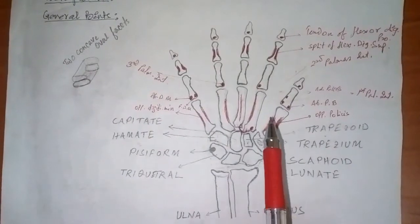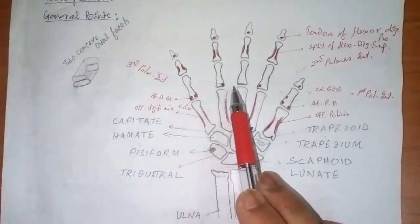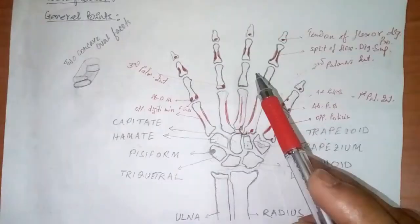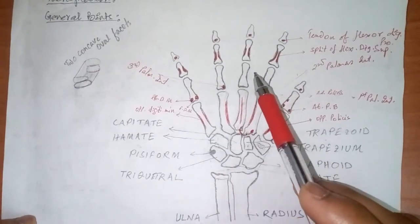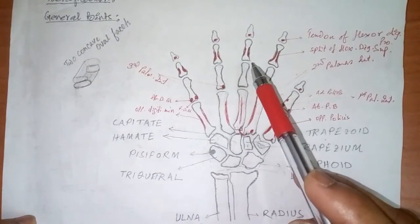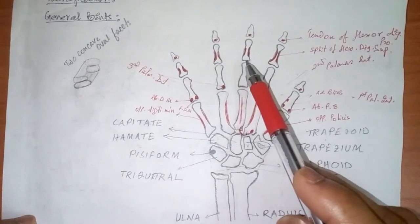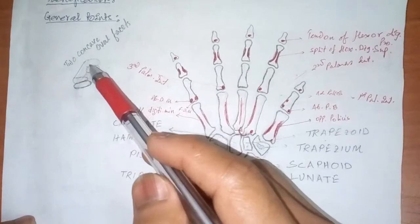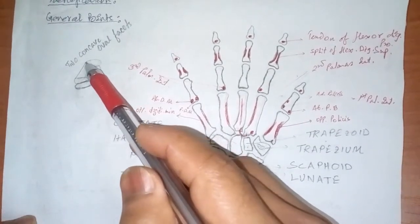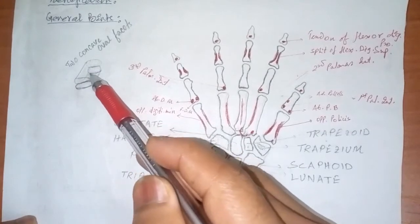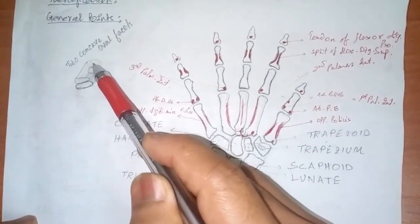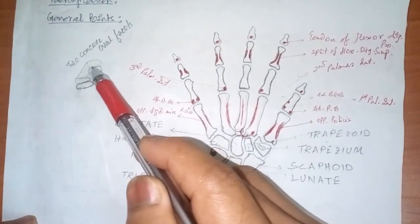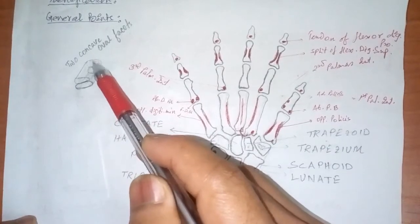In the proximal phalanges, the base is marked by a concave oval facet for articulation with the metacarpal bones. However, in the distal and middle phalanges, it is marked by 2 small concave facets separated by a small ridge. As I am drawing in a 3-dimensional figure, you can see one oval facet and another oval concave facet — so two concave oval facets are separated by a smooth ridge.